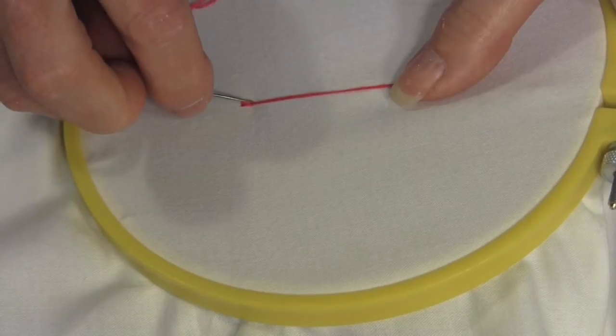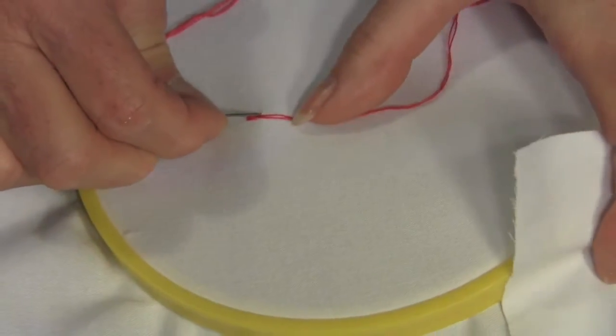Pull the thread through, keeping the U-shape under the needle point. Pull the loop flat to form a chain.